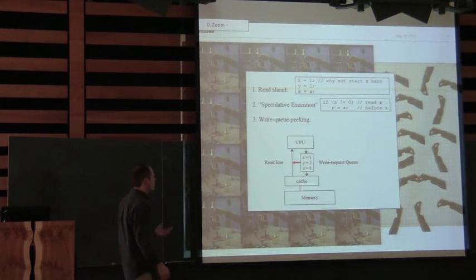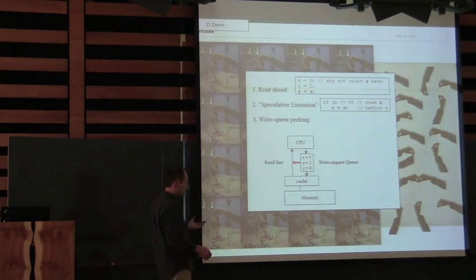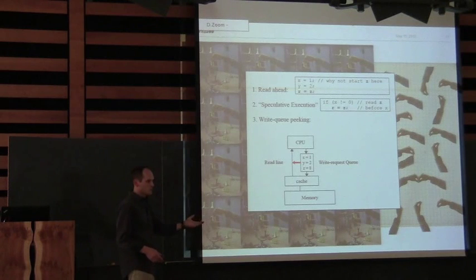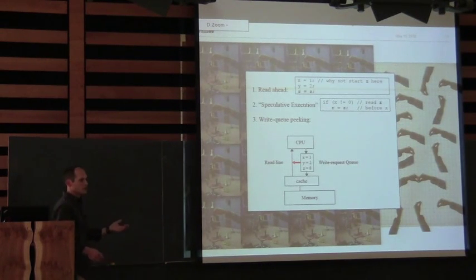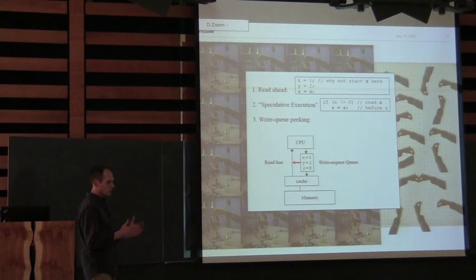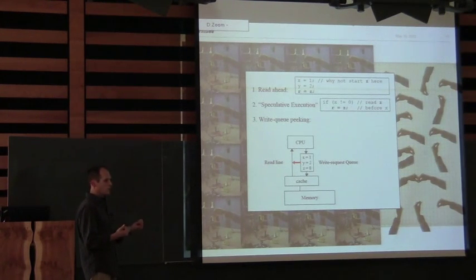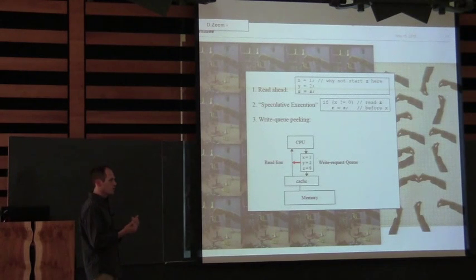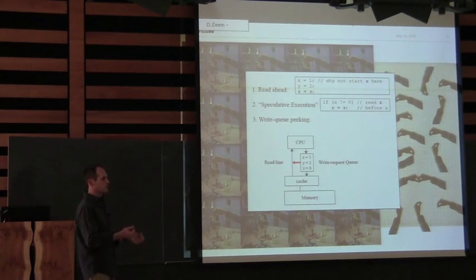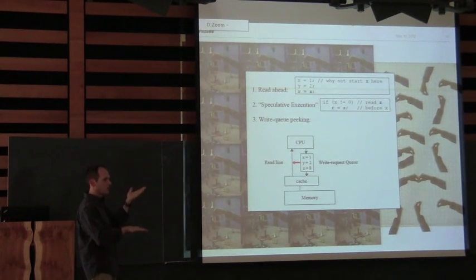Basically, once upon a time — back in the original Star Trek series era — computers were probably such that memory and the CPU were roughly the same speed. But CPUs have gotten way faster, so they're like a hundred times faster than main memory.